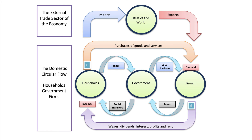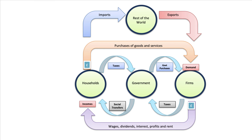We've now built a little external sector into the domestic sector. One more sector we can think about is the financial sector of the economy. Some household income, for example after tax, is not spent on goods and services but is saved — and firms can save money as well. Those savings, typically in the form of household savings in bank accounts, pension funds, and other forms of savings, flow into the financial sector.